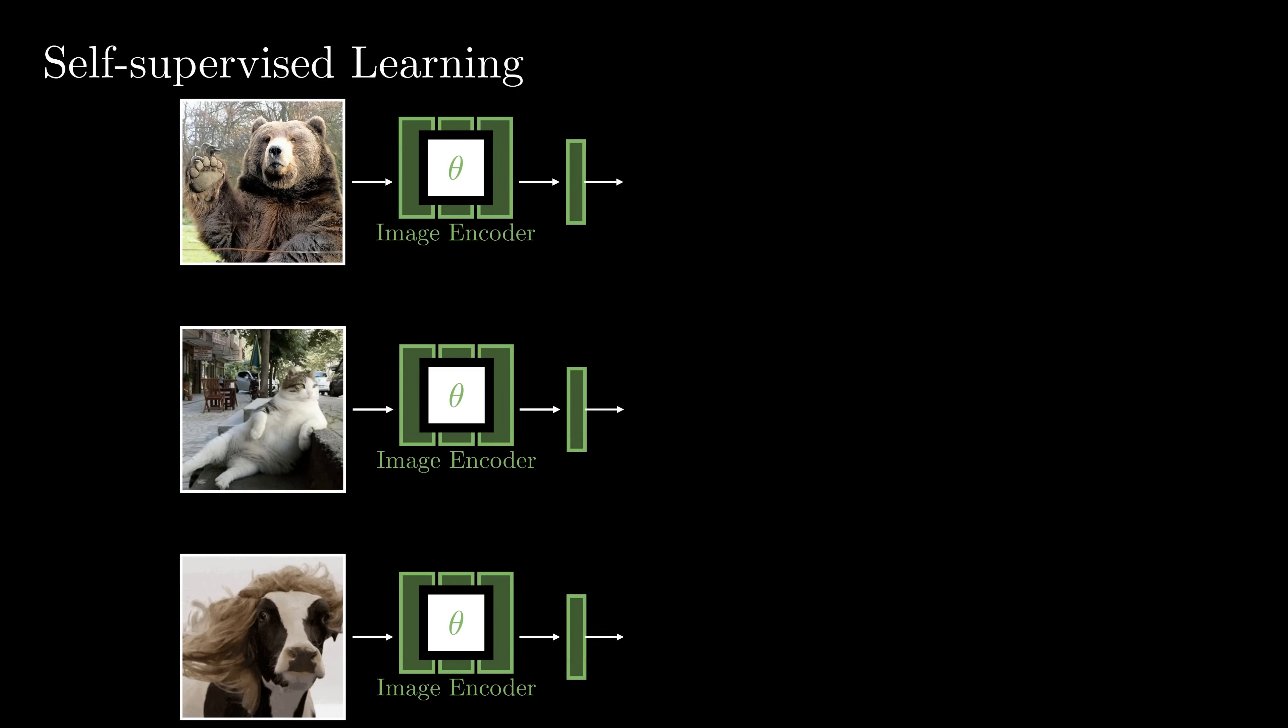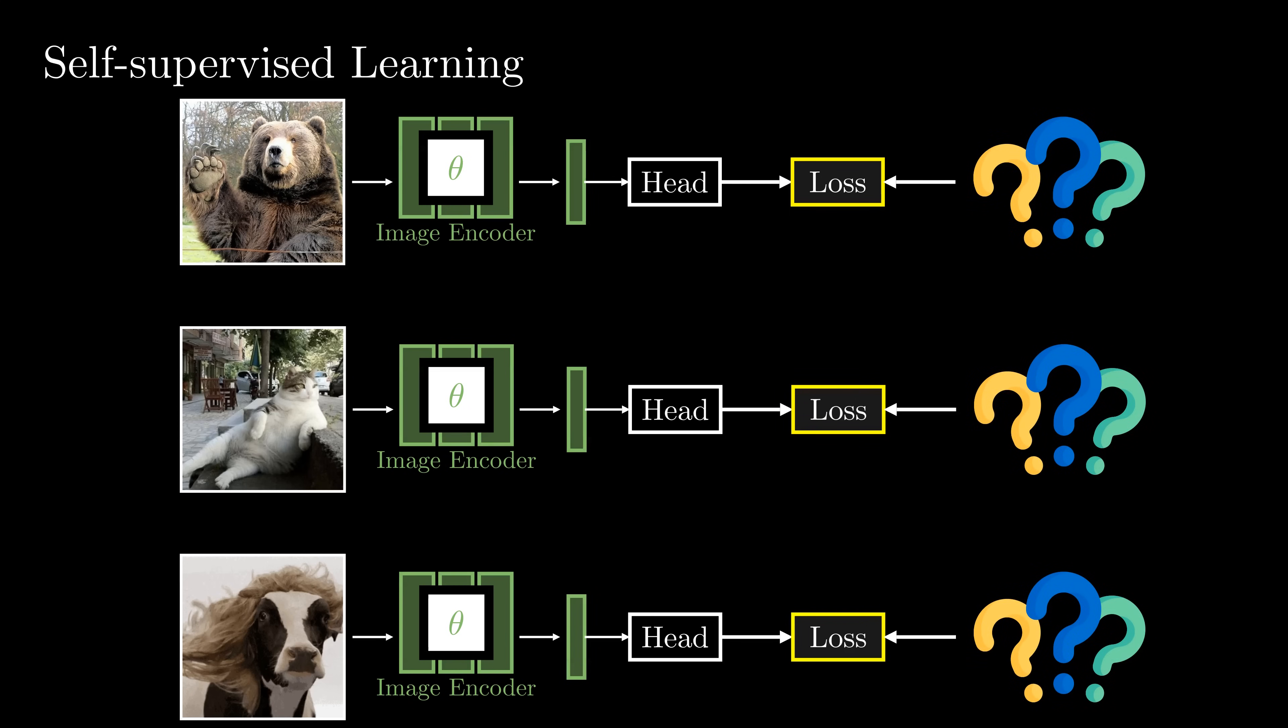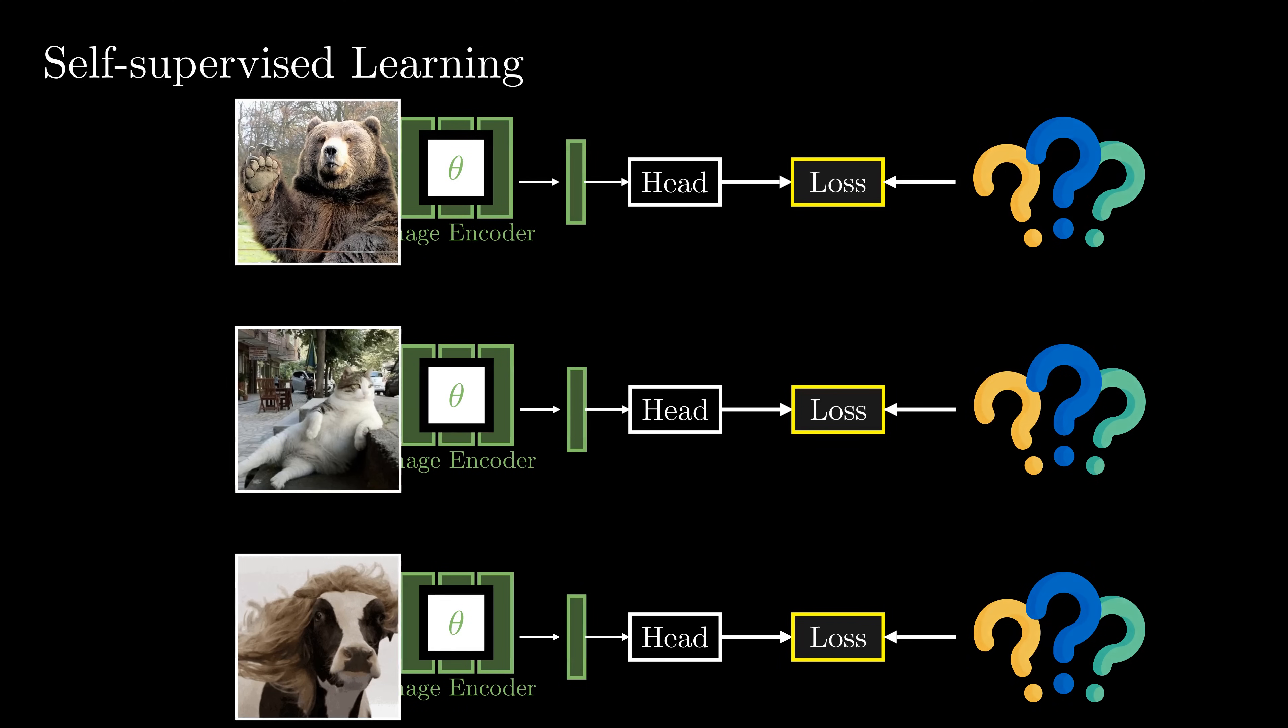Just like supervised learning, we extract image features, add an output head, and use a loss function. The challenge here is to create a supervision signal for training, but without relying on any human-provided labels. Over the years, researchers have developed creative strategies for self-supervised learning.